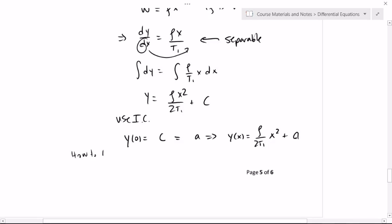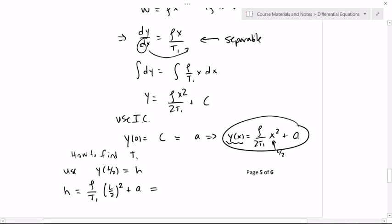So how to find t1? What I'm going to do is use one more condition that y at l over 2 I know to be some height given to me, namely h. So that says h, if I plug it into here, where I put an h here and put l over 2 there, I get h is equal to rho over t1 l over 2 squared plus a. And I'm going to skip the steps, but just with algebra, I'm going to show you that what you get when you solve for t1 and plug in is that y is 4h over l squared x squared plus a.